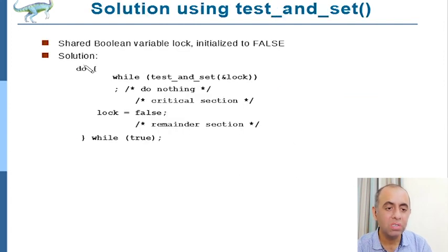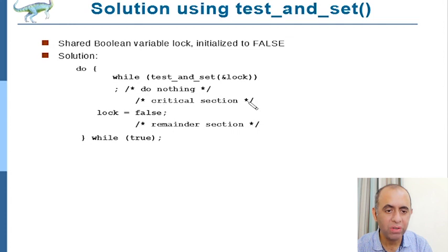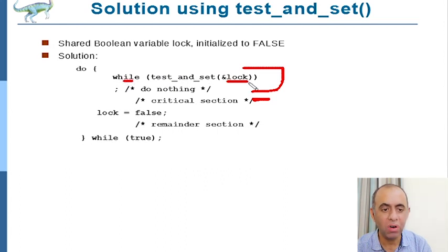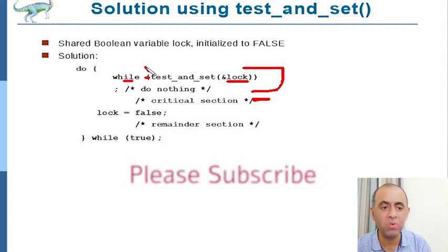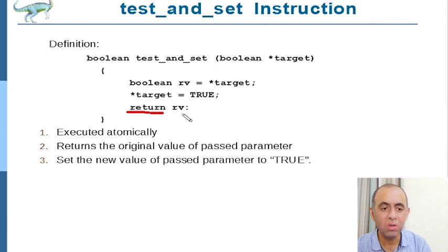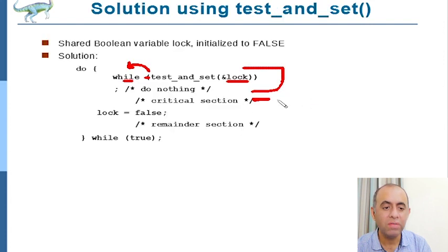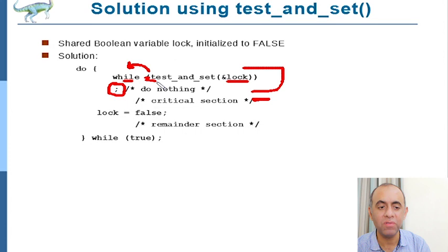This is the code for any process trying to enter its critical section. Before going into the critical section, in the entry section: while test-and-set for lock is true, keep looping. This function returns the old value of lock. So if the old value was 0 (lock was unlocked), the function returns 0 and the while loop condition is false — the loop breaks and the process goes into the critical section.